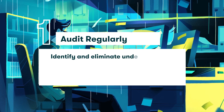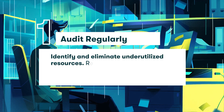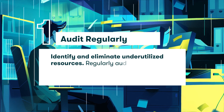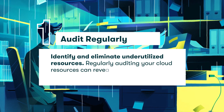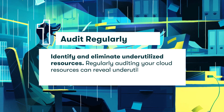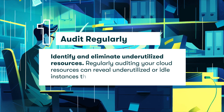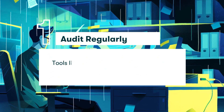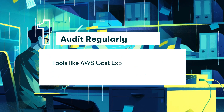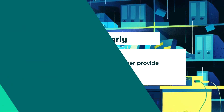One: audit regularly. Identify and eliminate underutilized resources. Regularly auditing your cloud resources can reveal underutilized or idle instances that drain your budget. Tools like AWS Cost Explorer provide transparency and control.